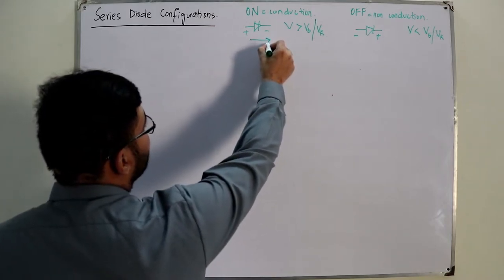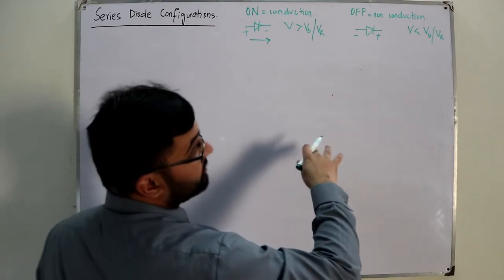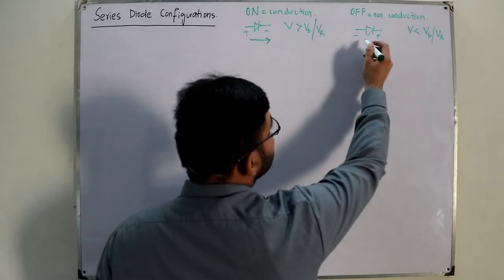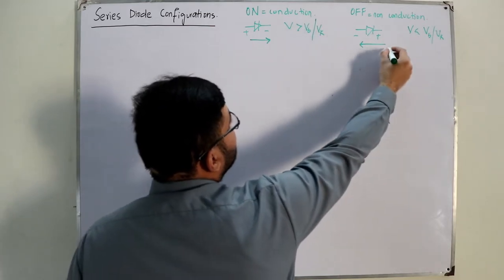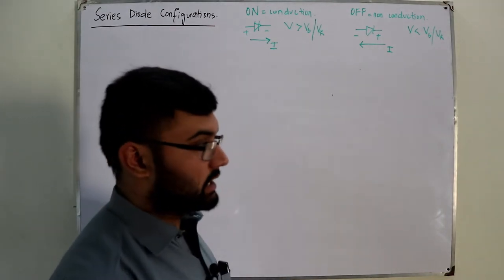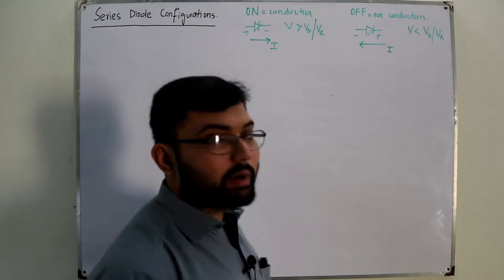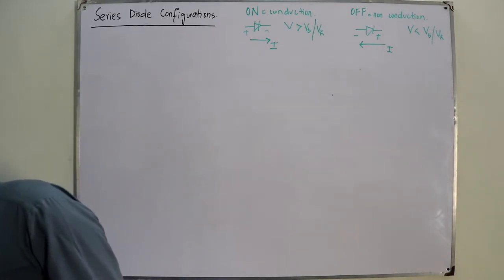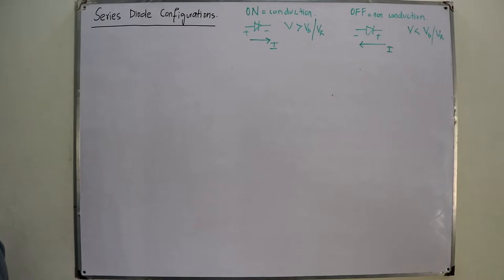For the on state, the direction of the conventional current is the same as the arrow symbol of the diode. For the off state, the direction of conventional current is opposite to the direction of the diode arrow. To apply basic mathematical rules, we replace the diode with its equivalent model.